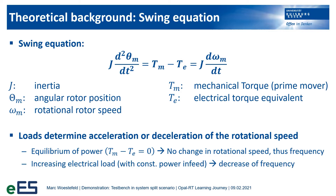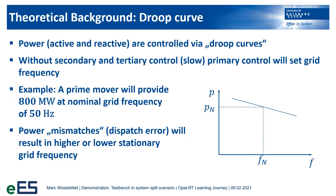But this just tells us whether the frequency will change or not. Without any additional value, it will not give us a specific frequency. This will be done by the droop curve. The droop curve is part of the primary control. Without secondary and tertiary control, it will give us a resulting frequency. Let us look at a power plant with 800 MW of nominal power. In normal operation, its prime mover will provide the needed power with a nominal frequency at 50 Hz.